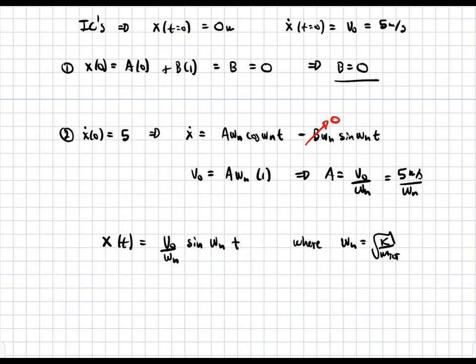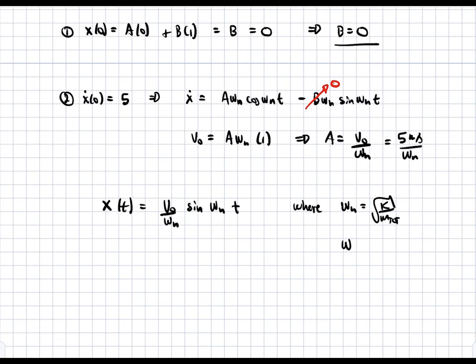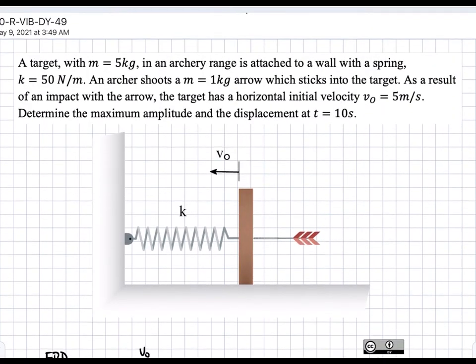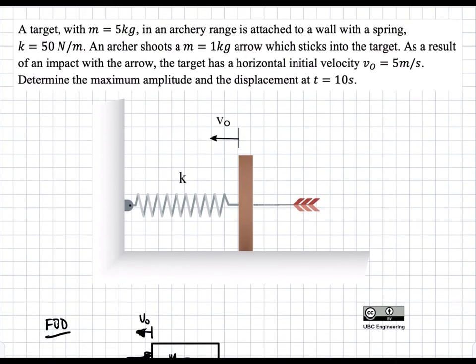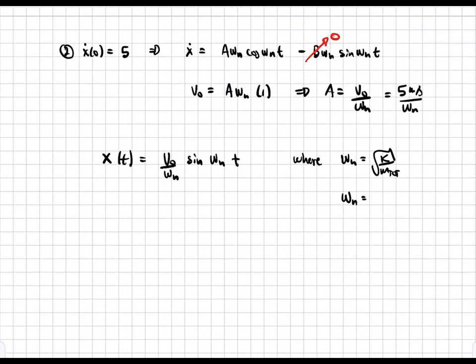We can calculate ω_n based on the given parameters. With k = 50 N/m and m_total = 6 kg (5 kg plate plus 1 kg arrow), ω_n = √(50/6) = 2.887 rad/s.